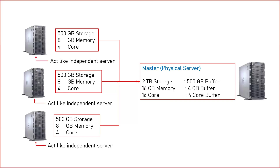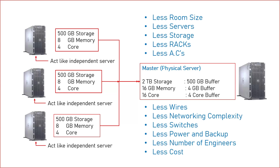What are the benefits if I have a single physical server instead of three physical servers, dividing one physical server into three virtual machines? This is one example of how a single physical server can be divided into multiple virtual machines which will act as independent servers. If instead of three machines I have only a single physical machine, then you need less room size, fewer physical servers, less storage, fewer racks, fewer ACs since your server count is reduced, less networking complexity, less wiring, fewer switches, less power backup, fewer engineers, and definitely less cost. This is a basic example of virtualization where we have reduced the total number of physical servers in the data center — and by reducing physical servers, you gain benefits on all these parameters.